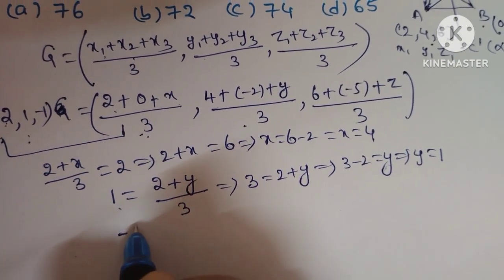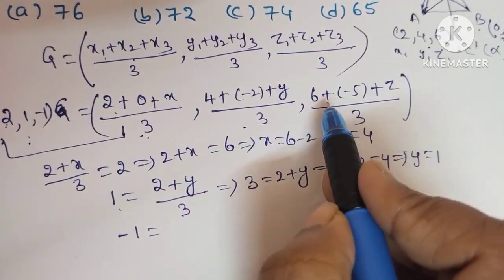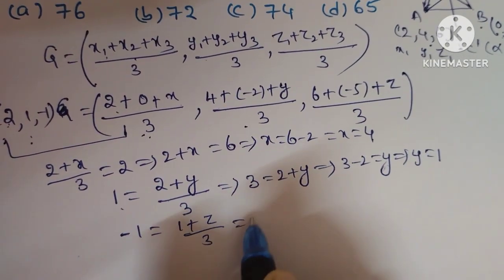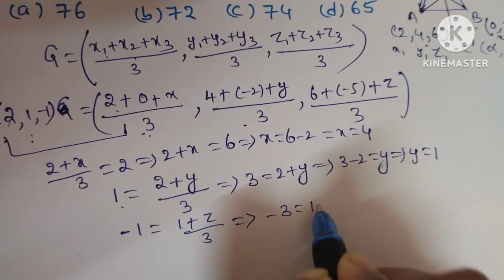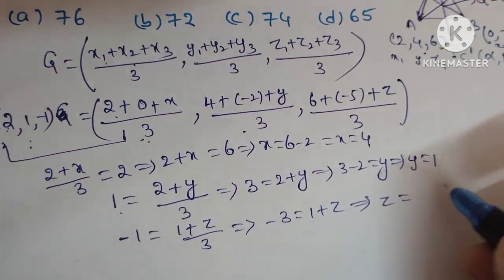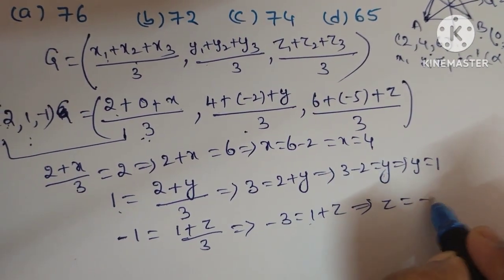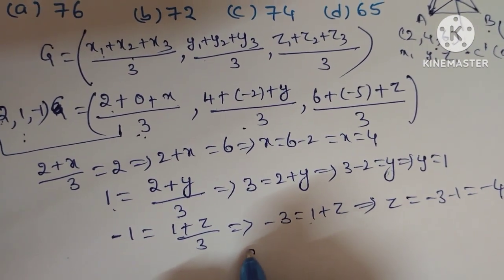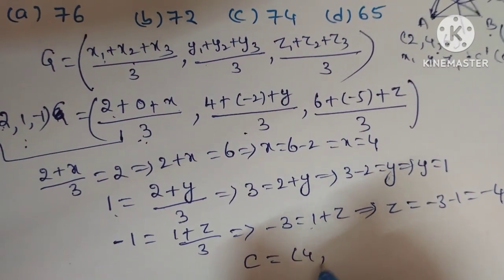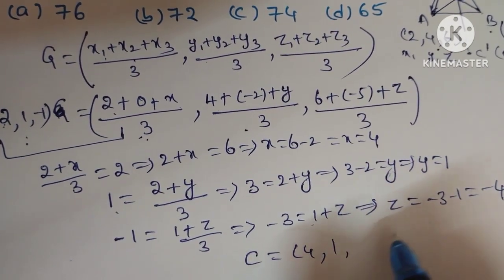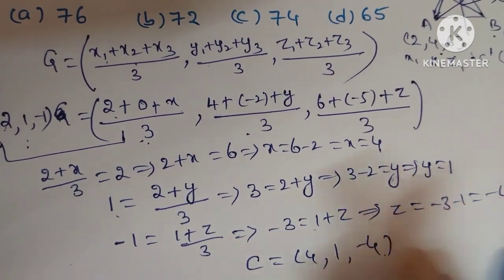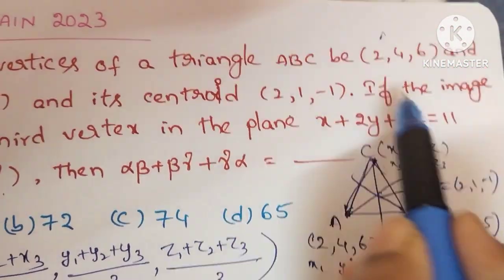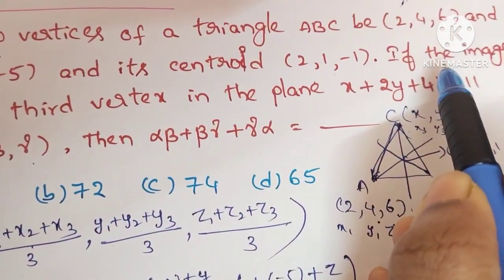Equating z-coordinates: (6 - 5 + z)/3 = -1, so 1 + z = -3, giving z = -3 - 1 = -4. So the third vertex C = (4, 1, -4).